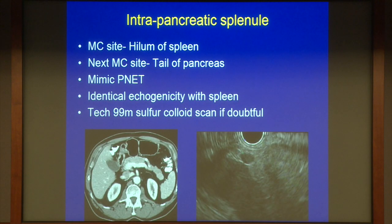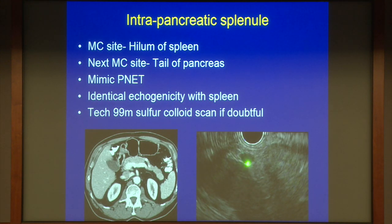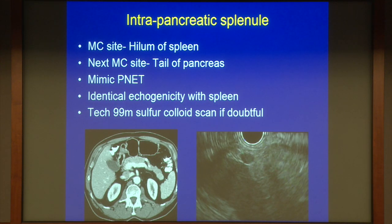Another interesting differential is intrapancreatic splenule. The most common site is the tail of the pancreas, very close to the spleen. It can mimic a neuroendocrine tumor because it looks well circumscribed. On EUS, the key is that it will be identical in echogenicity to the spleen — you just maneuver the scope slightly to view the spleen and compare. You don't have to stick a needle in. If in doubt, a sulfur colloid scan will give the answer.